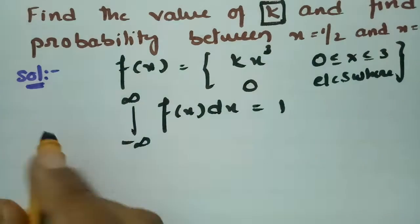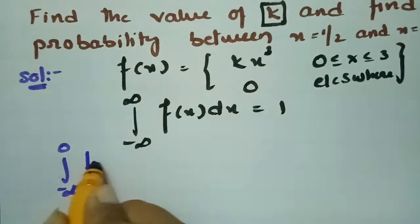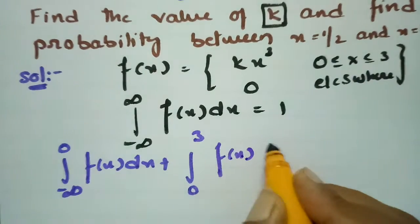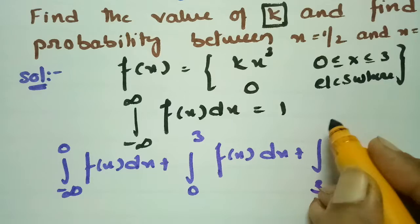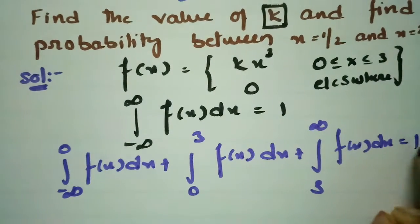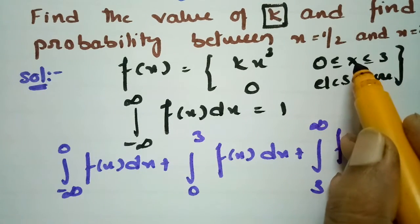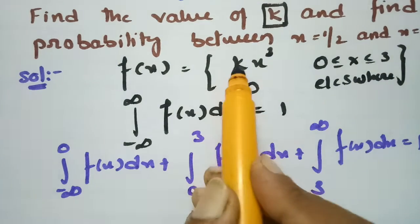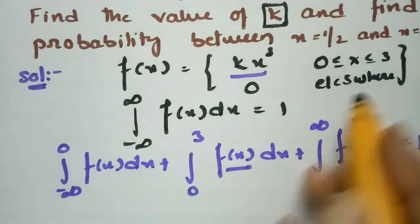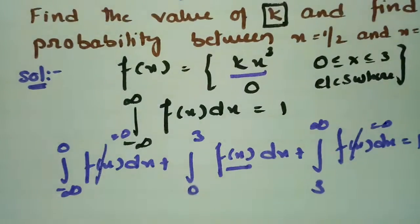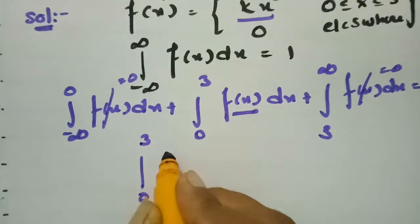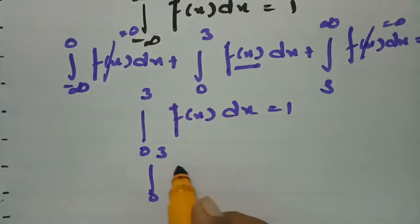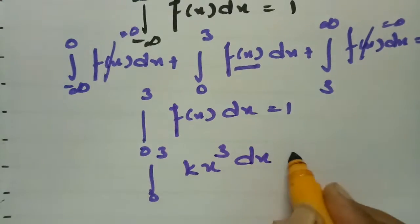Splitting the integral: from minus infinity to 0 of f(x) dx, plus from 0 to 3 of f(x) dx, plus from 3 to infinity of f(x) dx equals 1. Since f(x) = 0 outside [0, 3], the first and last integrals vanish. So we need the integral from 0 to 3 of k·x³ dx = 1.